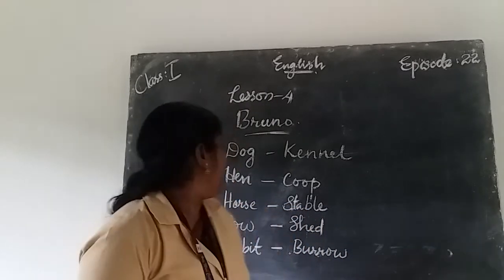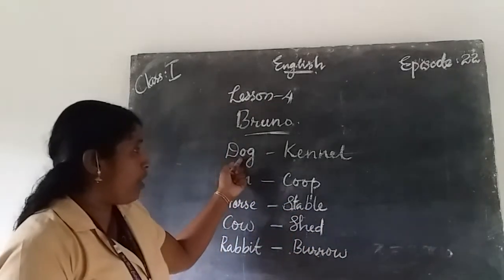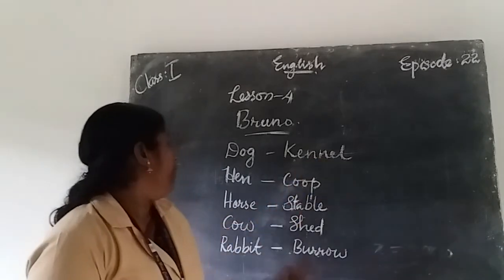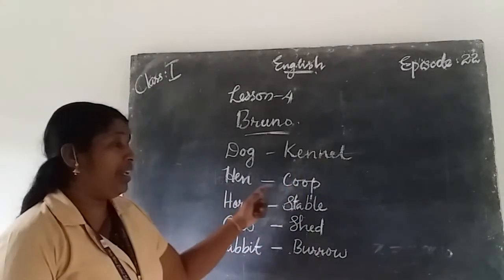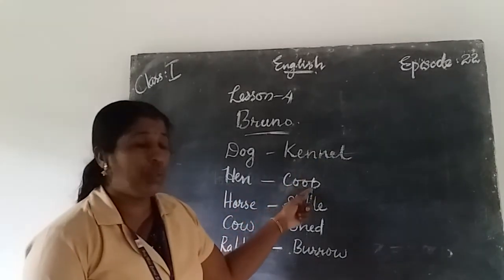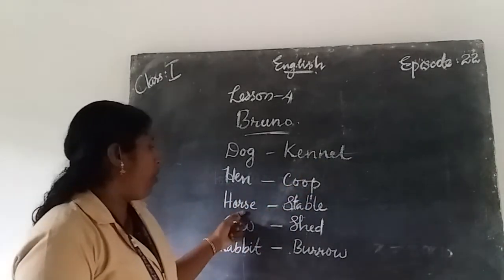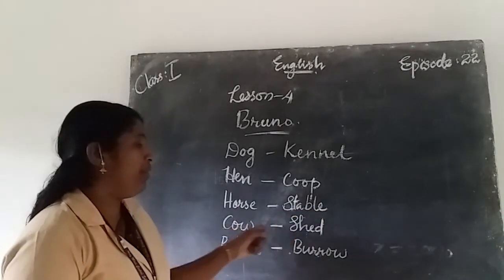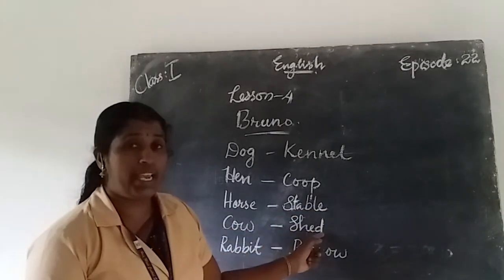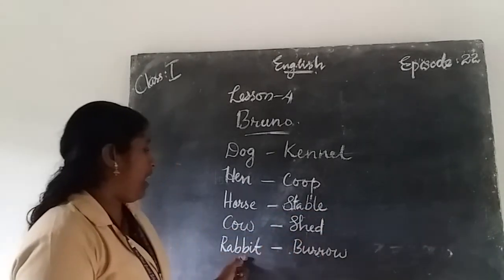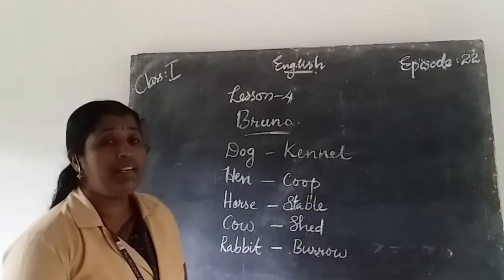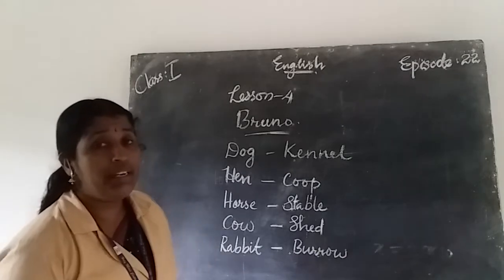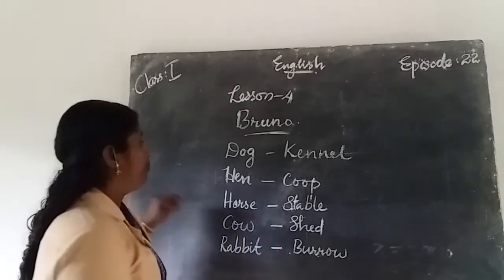Say louder once again: dog lives in kennel, hen lives in coop, horse lives in stable, cow lives in shed, rabbit lives in burrow.